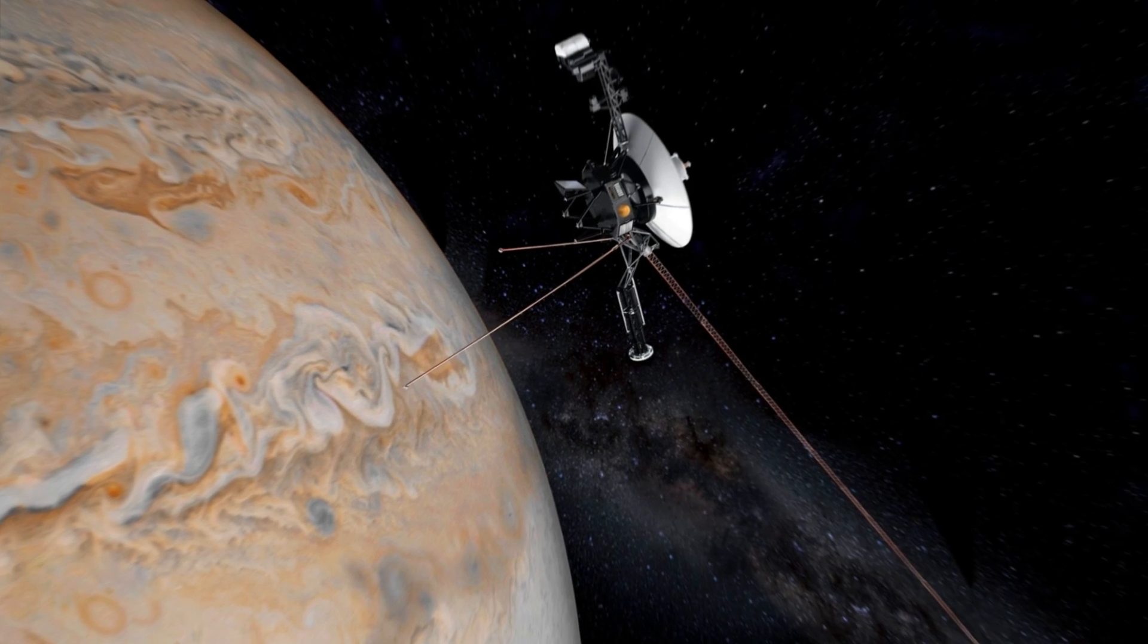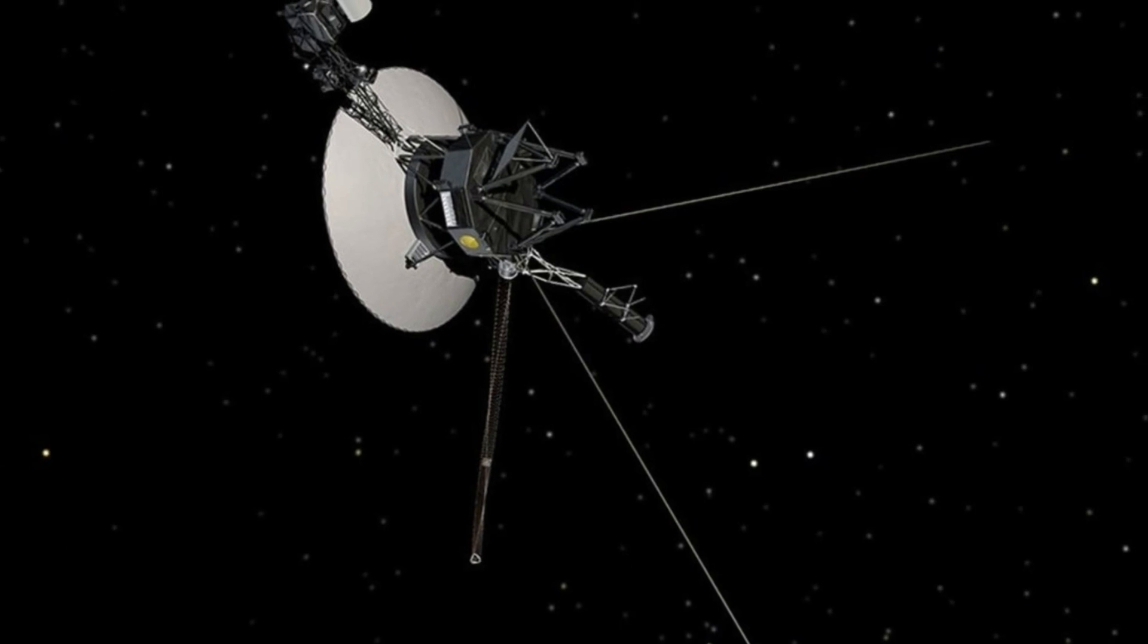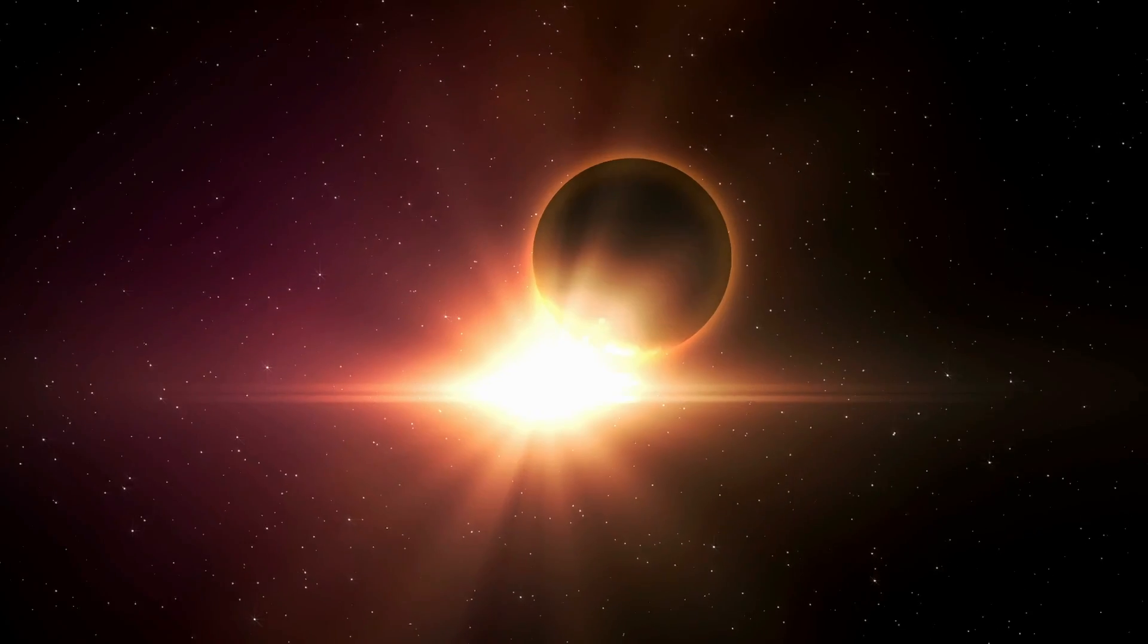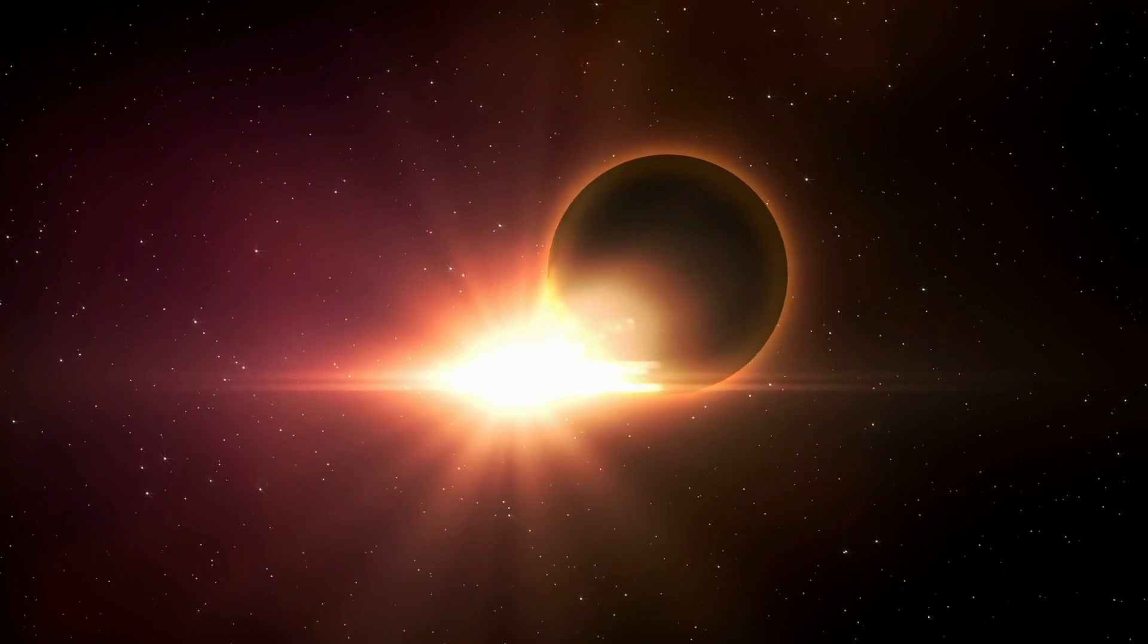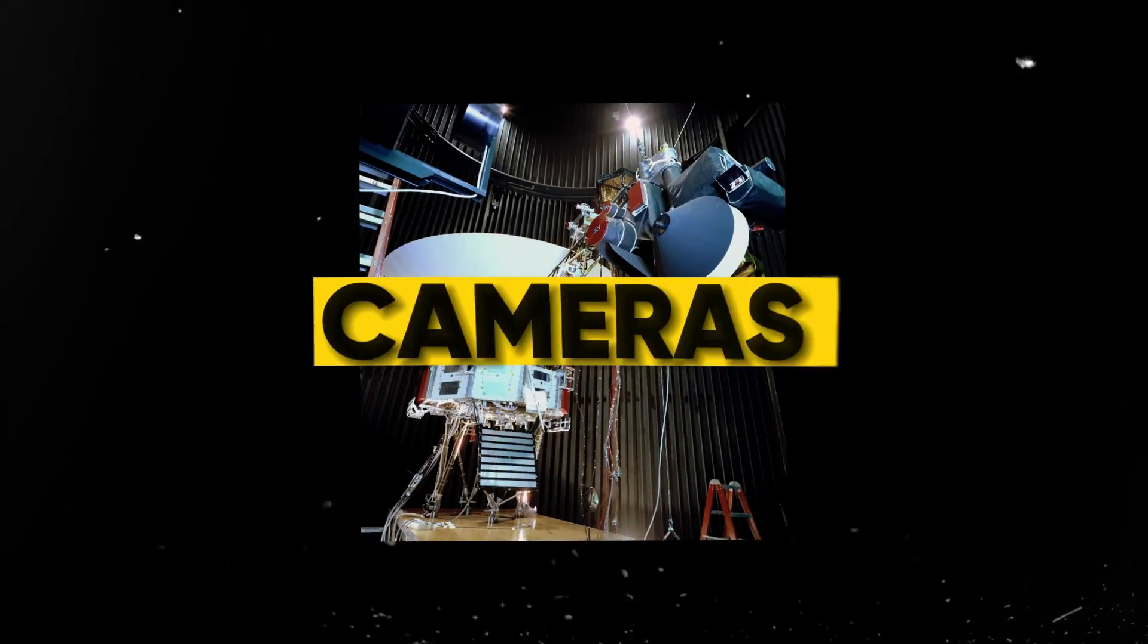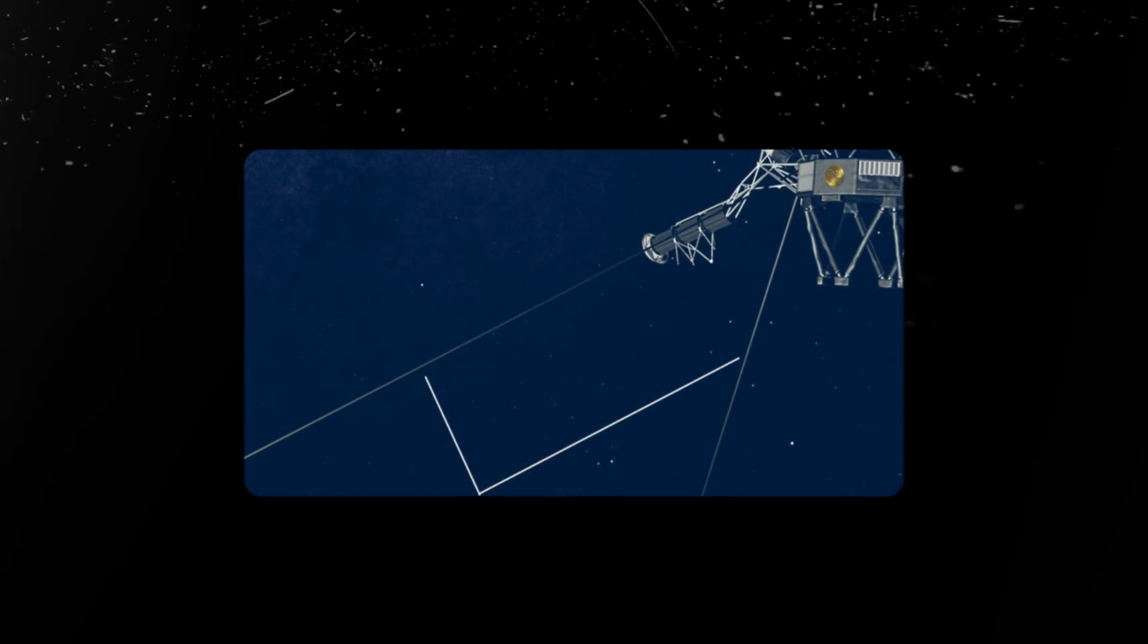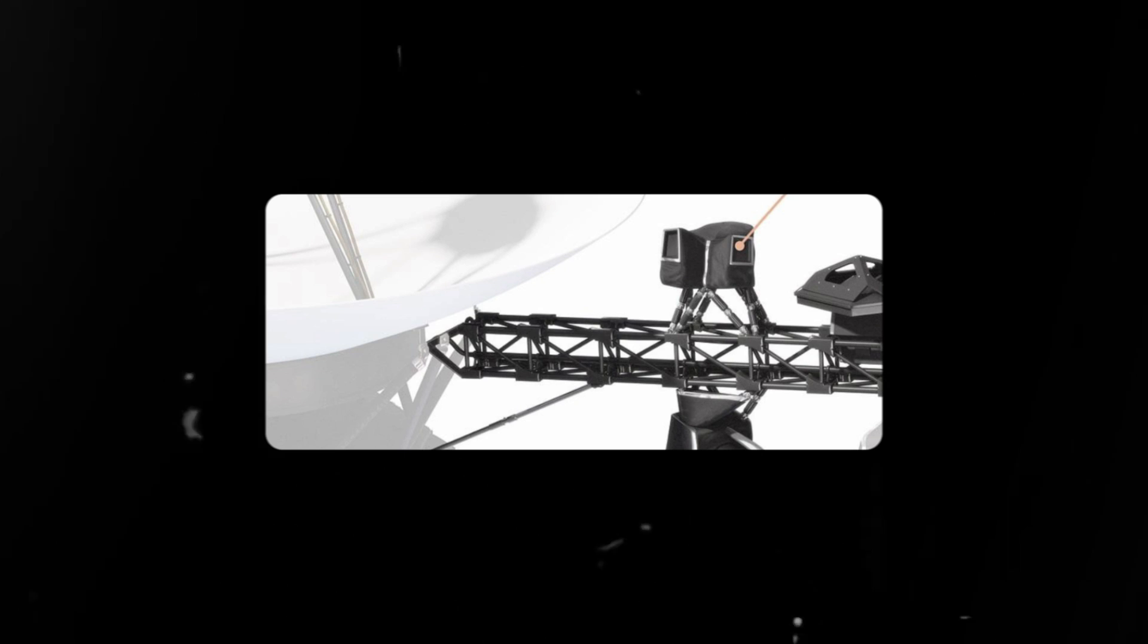Both Voyager 1 and Voyager 2 were carrying a wide range of scientific instruments designed to study the outer planets of our solar system. These instruments included cameras, magnetometers, plasma analyzers, cosmic ray detectors, and various other sensors.